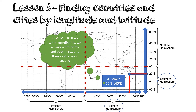Remember, if we write coordinates, we always write north and south first and then east or west second. This brings us to the end of our geography lesson — lessons 1, 2, and 3 — which is all about map skills. I hope that you enjoyed this lesson and if you have any questions, please contact me.